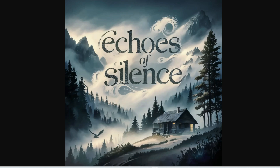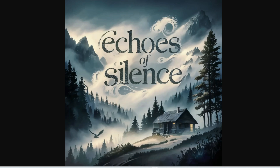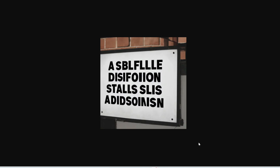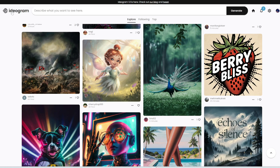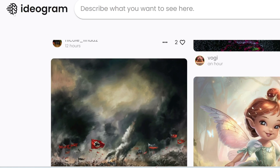But here's the thing. Traditionally, if you used Stable Diffusion or Dolly or even Midjourney, it could not generate letters and words very well. Here's an example from Stable Diffusion, here's another one — you can see it doesn't really understand words. So it's pretty much impossible to have an image with legitimate words and letters.